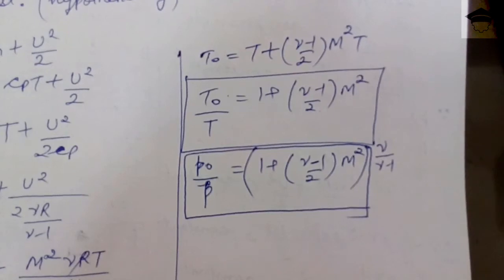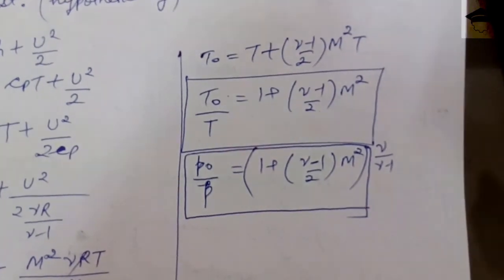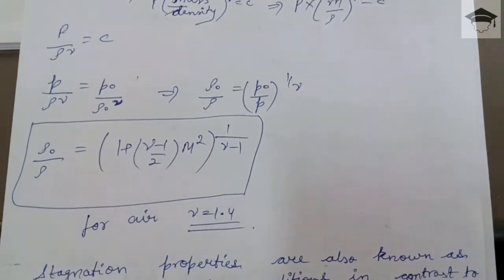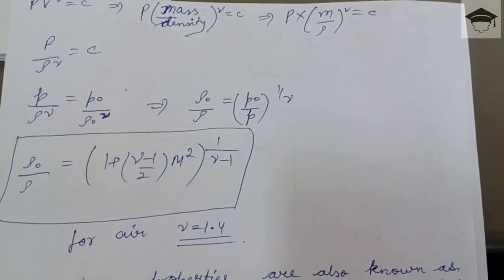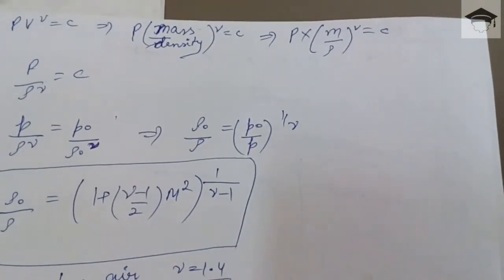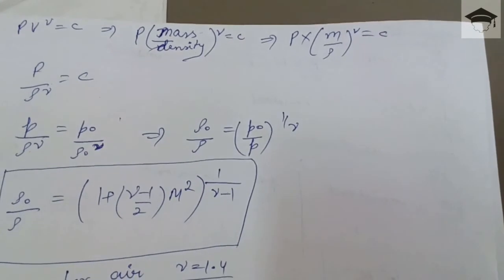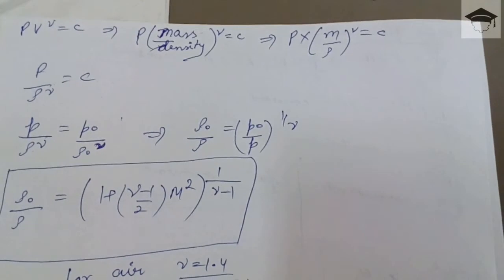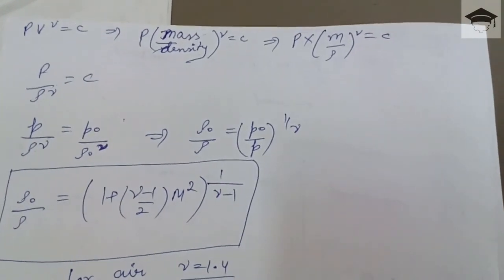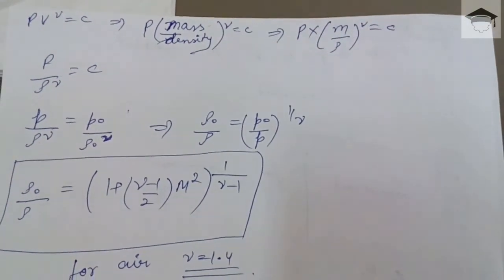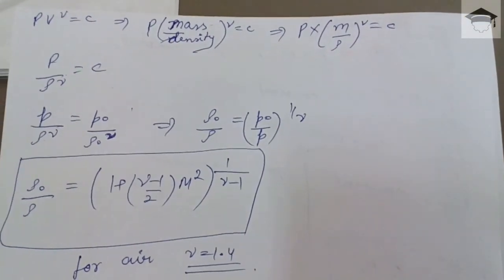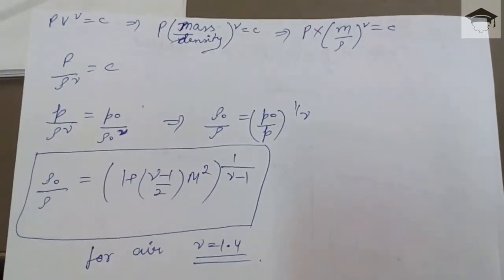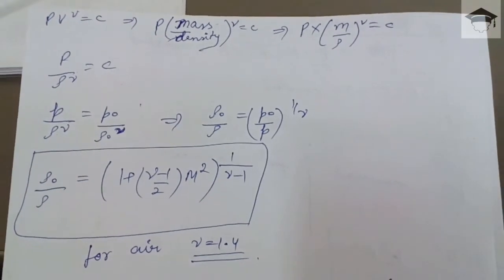For density, we know p·V^γ = constant and volume is proportional to mass/density, so p/ρ^γ = constant. This gives p₀/ρ₀^γ = p/ρ^γ, and solving yields ρ₀/ρ = [1 + (γ−1)/2 · M²]^(1/(γ−1)). We have now found relations between stagnation and static pressure, temperature, and density.